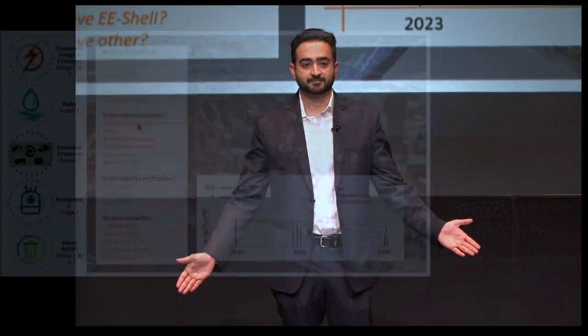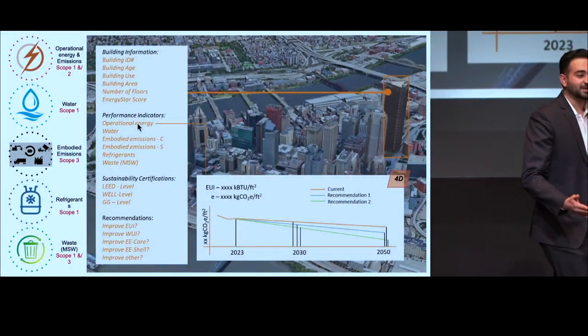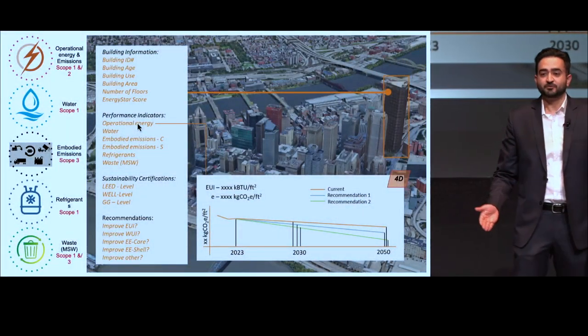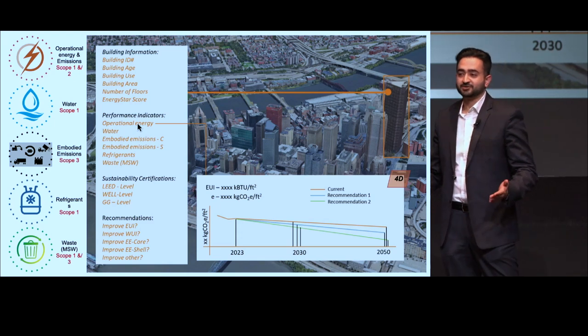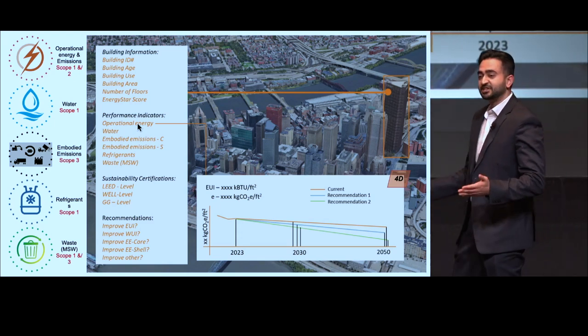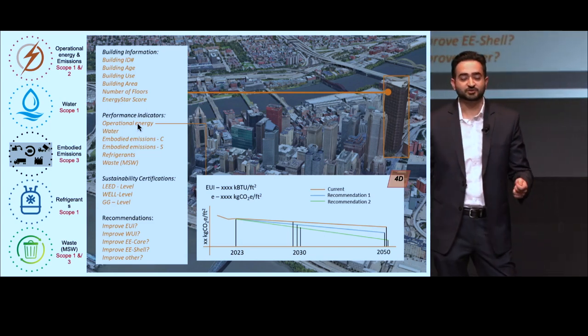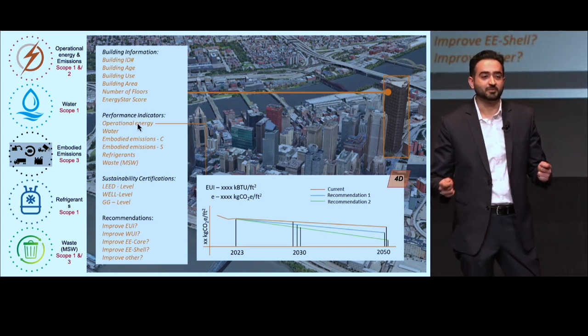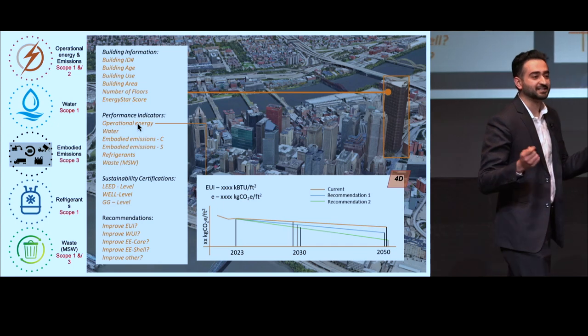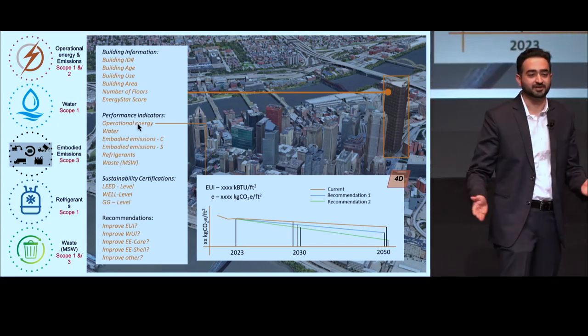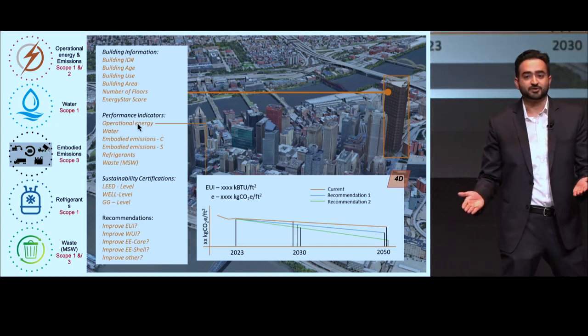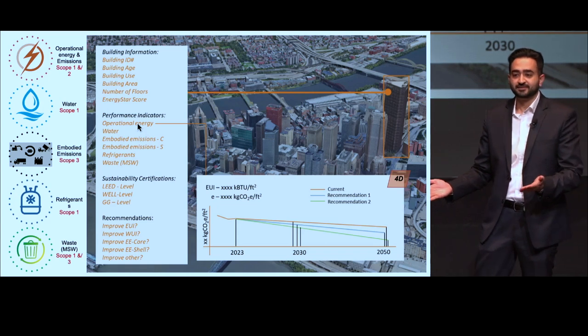Buildings like the one we are in today continue to remain one of the largest consumers of natural resources. Data suggests that the built environment is responsible for 40% of global greenhouse gas emissions. 79% of all energy and 61% of all electricity produced in the U.S. comes from burning fossil fuels that release significant amounts of emissions into the atmosphere, causing global warming and contributing to climate change.